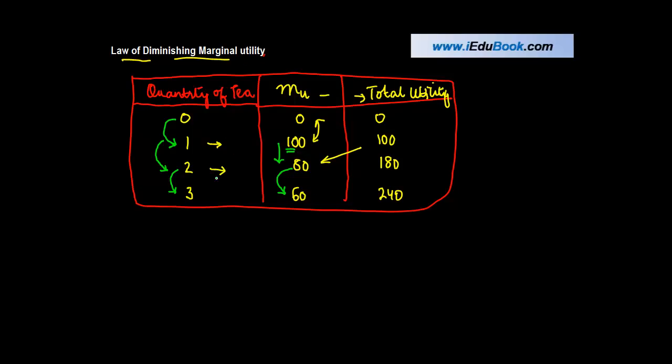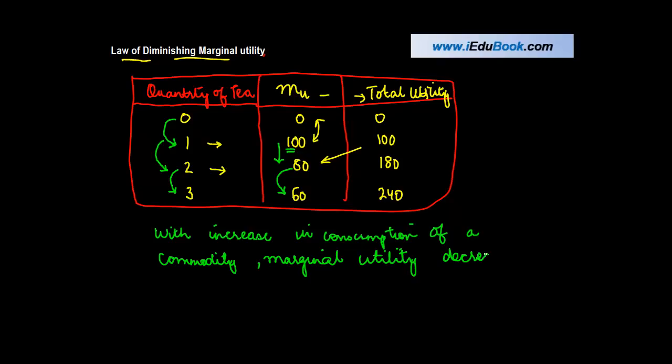What the law of diminishing marginal utility says is that with increase in consumption of a commodity, marginal utility decreases. Isn't it true? I mean, let's say for example, even when you go for your breakfast or for your lunch, or maybe even for a sweet dish.